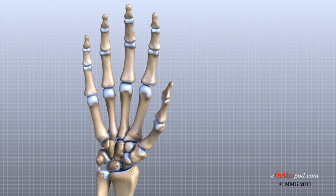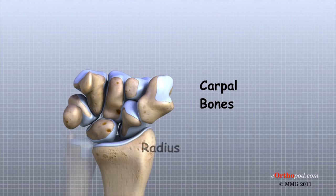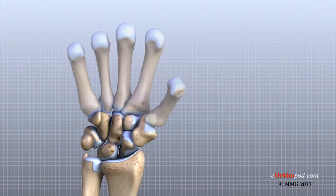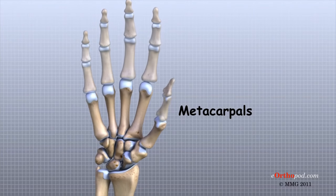There are 27 bones within the wrist and hand. The wrist itself contains eight small bones called carpals. The carpals join with the two forearm bones, the radius and ulna, forming the wrist joint. Further into the palm, the carpals connect to the metacarpals. There are five metacarpals forming the palm of the hand, and one metacarpal connects to each finger and thumb.